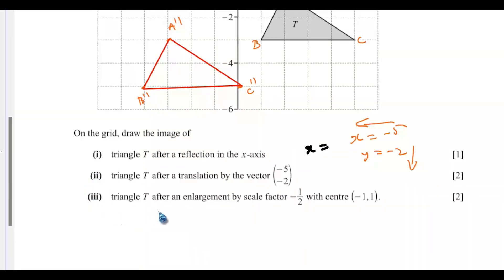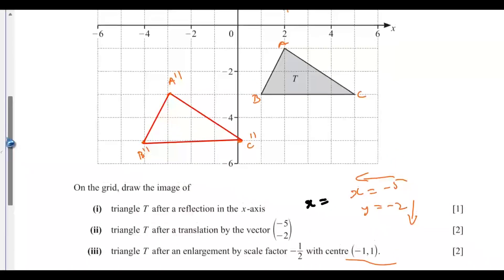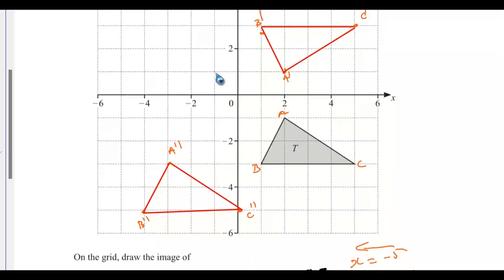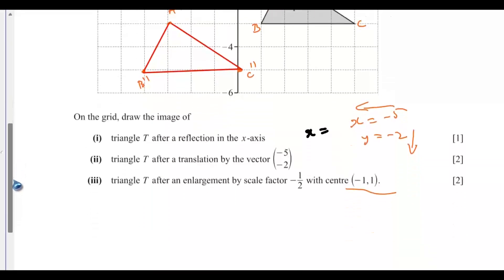Roman numeral 3: triangle T after enlargement by scale factor negative 1/2, with center (-1, 1). The first thing is to locate the center of enlargement: x equals negative 1, y equals 1. Since the scale factor is a fraction, the image will be smaller than the object. The negative sign tells us we have to move in the opposite direction.